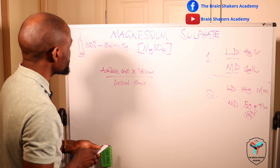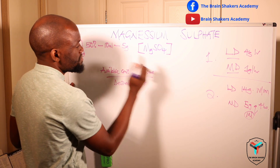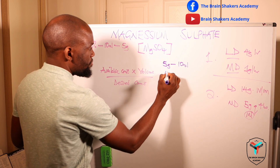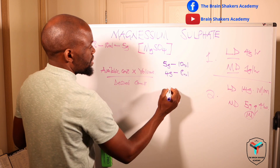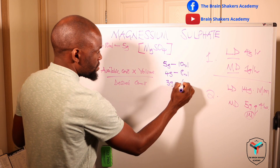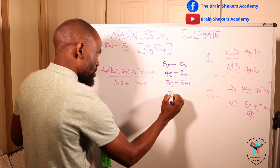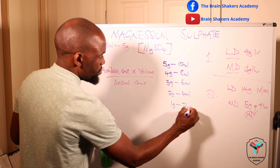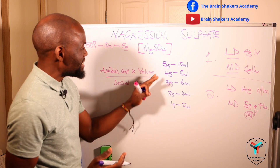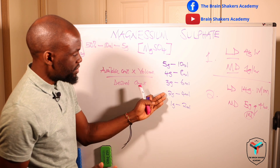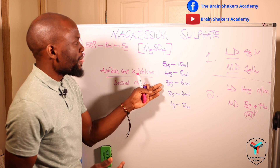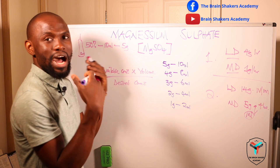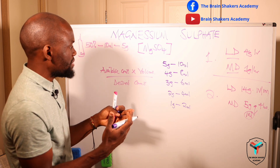Doing the arithmetic: if there are 5 grams in a 10 mL ampule, then 4 grams is 8 mL, 3 grams is 6 mL, 2 grams is 4 mL, and 1 gram is 2 mL. If you have a different presentation — 1 gram, 2 gram, or 3 gram ampules — but the concentration is still 50%, you use the same formula to arrive at the total volume to administer.